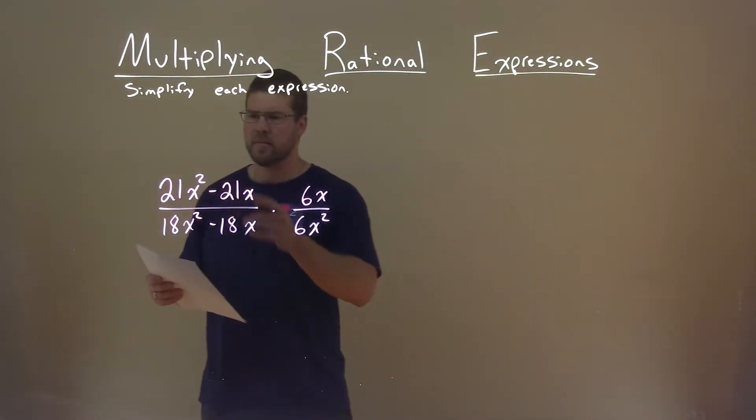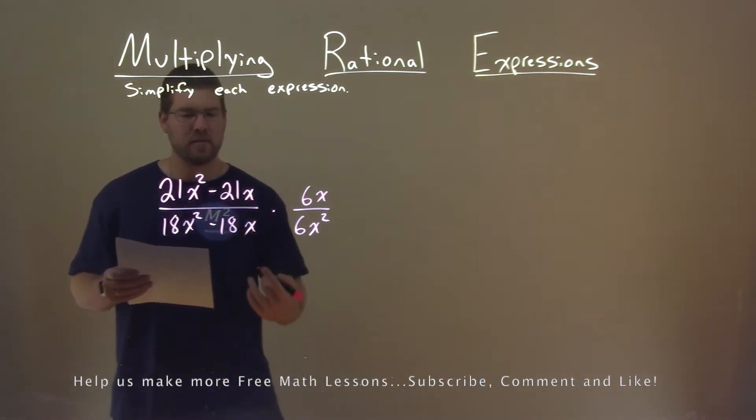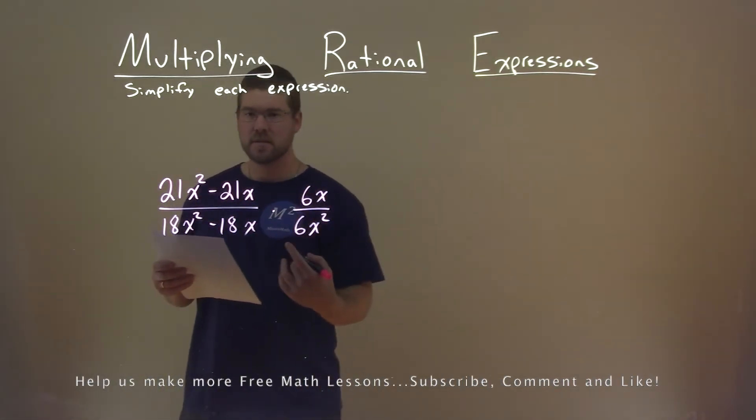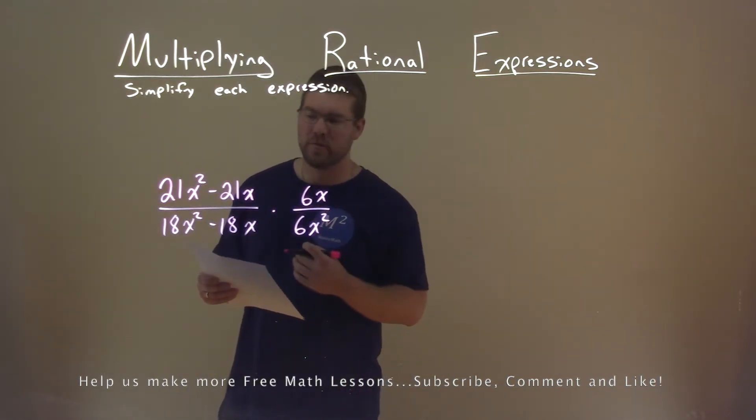We're given this problem right here: 21x squared minus 21x divided by 18x squared minus 18x times 6x divided by 6x squared, and we need to simplify this expression.